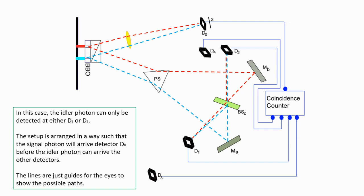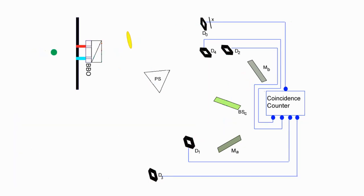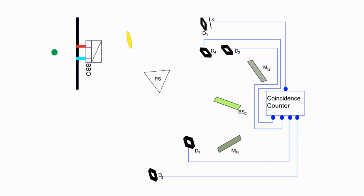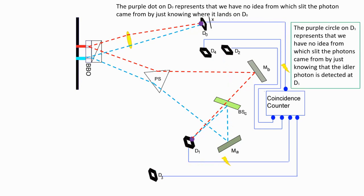The purple circles on the detectors represent that we cannot figure out from which slit the original photon went through by just knowing where the signal photon lands on D0 and idler photon get detected at D2. The situation is similar when the idler photon get detected at detector D1. Please also don't forget what the coincident counter is doing.